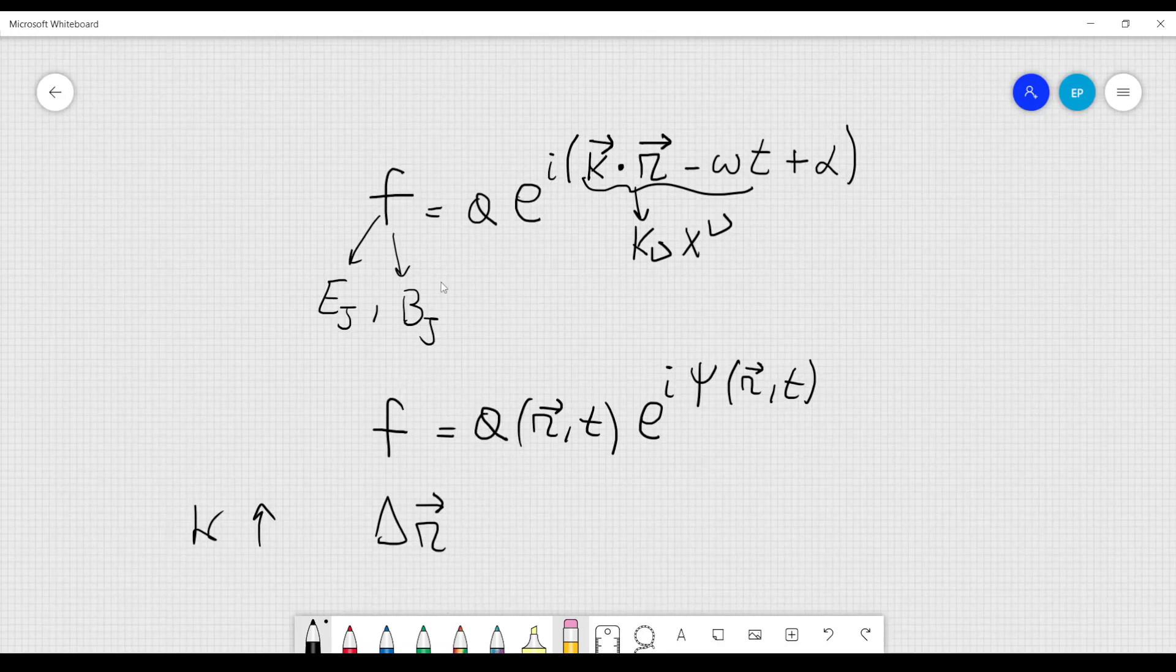If k is very large, we cannot change r too much without spanning the entire wave, because we would go all along the period of the wave. But if delta r is small, a will not change too much. That's what we are assuming here, that the amplitude will not change too much when we study the properties of the wave.